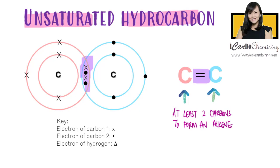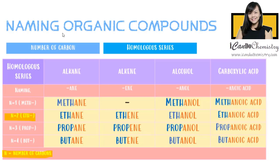For the alkene homologous series, the first member which has two carbons is ethene. The second member has three carbons and is called propene. The fourth member has four carbons and is butene.